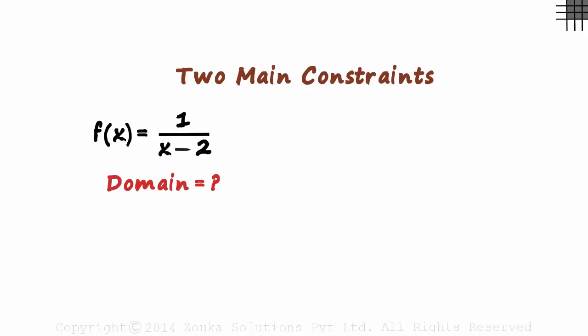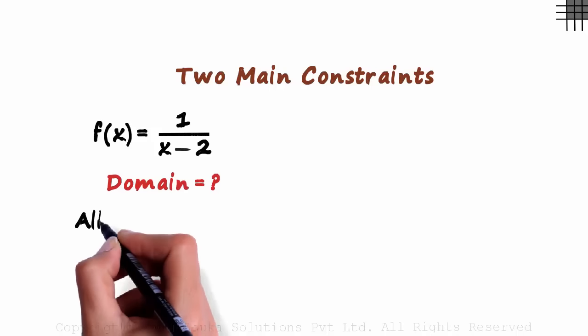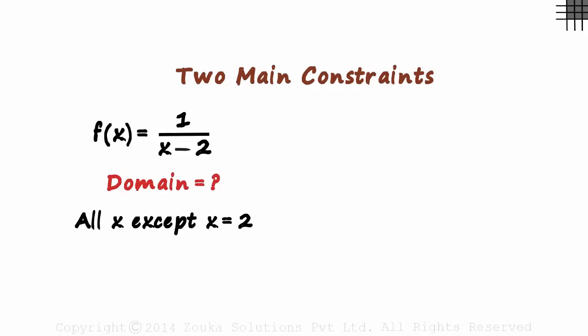Yes, all but one value. The domain will be all x except x equal to 2. That's the first constraint. The denominator has to be a non-zero. Cause if it is a zero, then the function will be undefined. Easy?